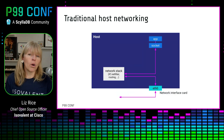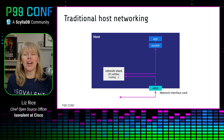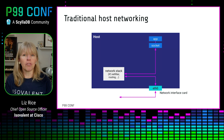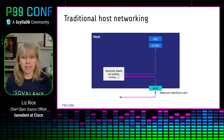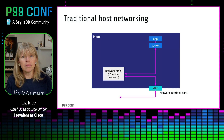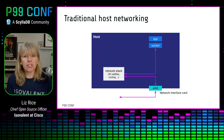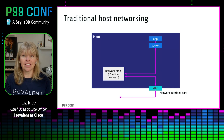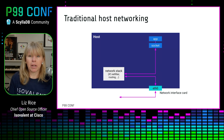In what we'll call traditional pre-container networking, we run the application directly on the host, and it sends and receives packets over a network socket. Those packets are handled by the kernel's networking stack, which does things like figure out how to route the packet — that is, where to send it next. In this example, egress traffic from the application gets routed out over the Ethernet connection to the wire, and ingress traffic gets sent over the socket to the application.